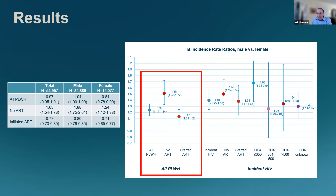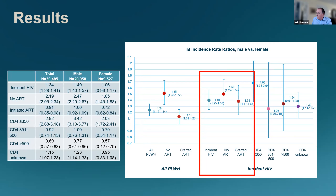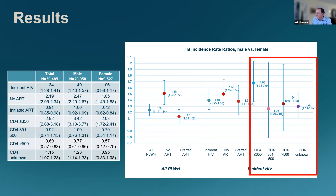The incidence of TB was about just under 1% per year, but it was higher in men than in women, as seen in the general population without HIV. It was higher in men on ART than in women, and higher in men who initiated ART than in women, though that was attenuated. Looking at the boxed area, the ratio of males to females is significantly higher, particularly for those not on ART.